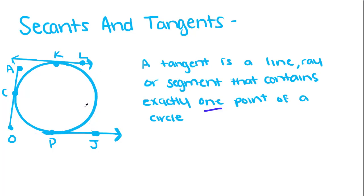So this ray PJ, this segment AO, and this line KL, are all tangents of this circle.